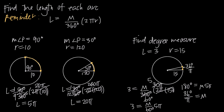Remember that the degree measure of the arc is always the same as the interior angle measure. So if we're asked to find the degree measure of the arc, we do exactly what we did here and solve for M. If we were asked to find the interior angle measure, we would give the exact same value, since the degree measure of the arc is always equal to the degree measure of the associated interior angle.